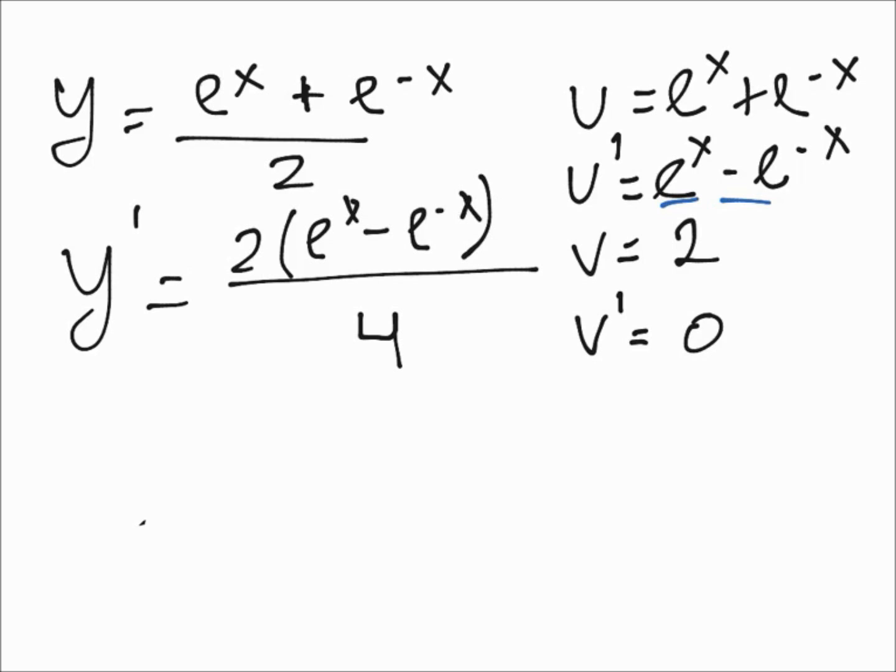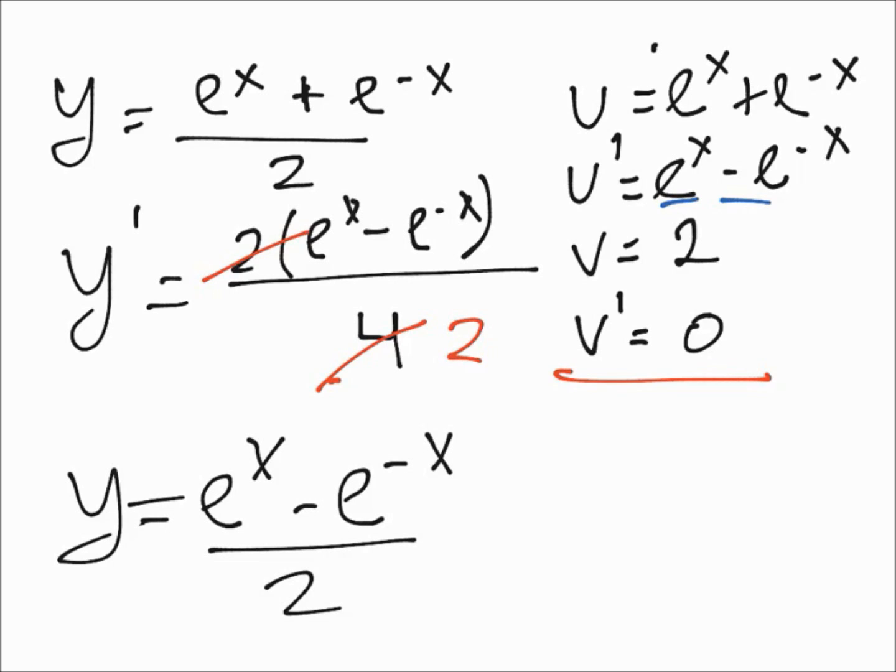Then minus v prime times u, and because v prime is 0, then we can just leave it as nothing. Then after this, this will cancel with this and we'll have 2 here, and the result is (e^x - e^(-x))/2. So basically the only change is this sign.